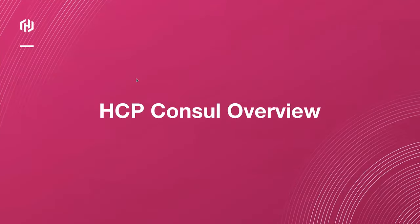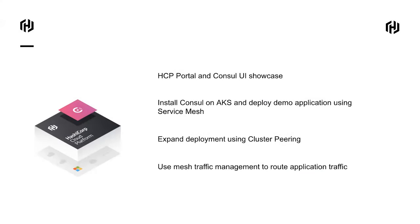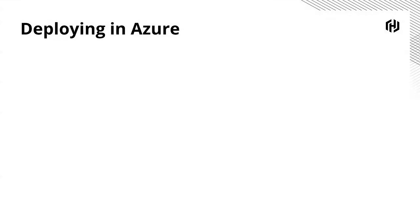Now let's take a closer look. In the next sections, I'll show you how to create a managed Consul cluster using the HCP portal, then install Consul on an AKS cluster and deploy a demo application using service mesh, expand that deployment using cluster peering, and finally use service mesh traffic management techniques to route application traffic. When creating your HCP Consul cluster, the cluster will be hosted inside a virtual network managed by HashiCorp called the HashiCorp Virtual Network.